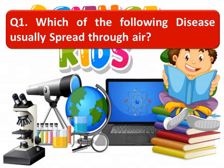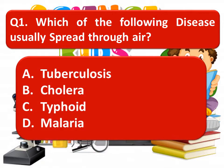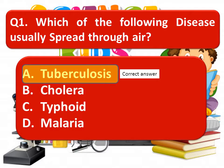Which of the following diseases usually spread through air? The options are: tuberculosis, cholera, typhoid, and malaria. The correct option is tuberculosis.